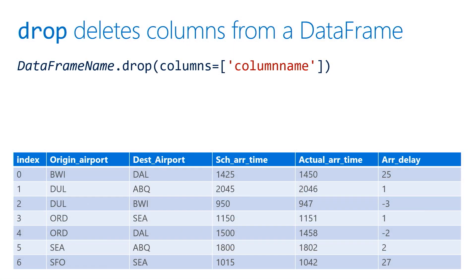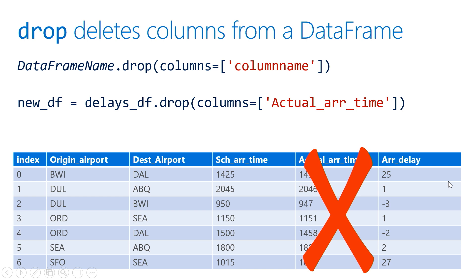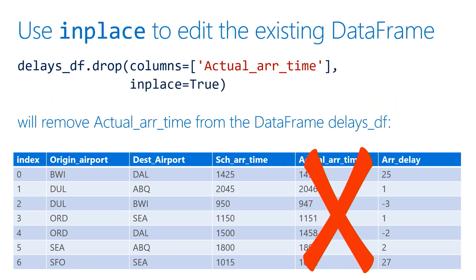Well, as you're discovering, pandas has some fantastic features, and the data frame object has a drop method. So you can simply say drop a particular column. On my delays data frame, let's drop the column called actual arrival time. What this doesn't do is actually modify the delays data frame — it simply returns a new data frame which contains everything except the actual arrival time.